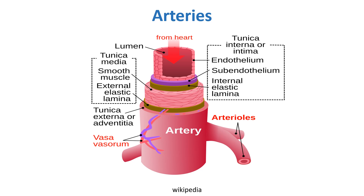To understand the three layers of arteries, here is a diagram. First is the tunica adventitia, the outermost layer, made of connective tissue. Then there is the tunica media, the middle layer, which comprises smooth muscle and external elastic lamina. Then the innermost layer, the tunica intima, contains endothelium, sub-endothelium, and internal elastic lamina. The tunica media has the external elastic lamina, while the tunica intima has the internal elastic lamina.